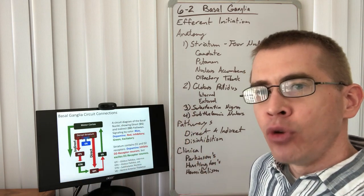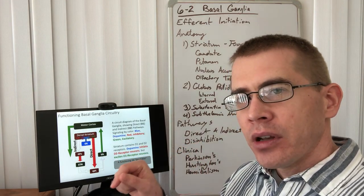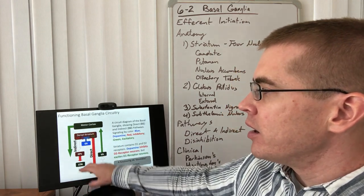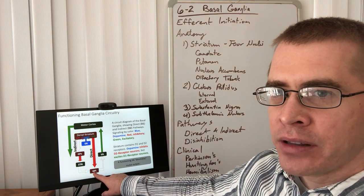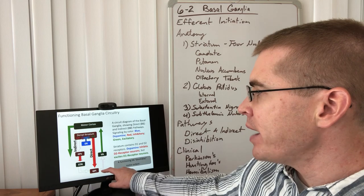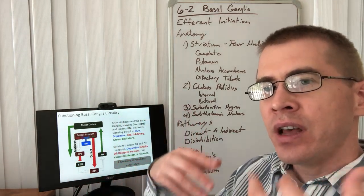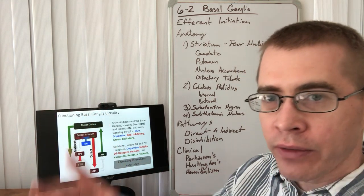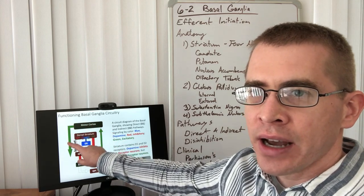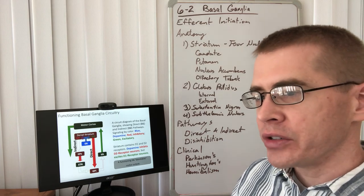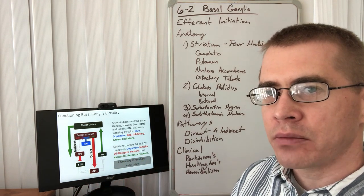With the substantia nigra releasing dopamine into the putamen, that causes inhibition of the indirect pathway and excitation of the direct pathway. The direct pathway inhibits the GPi, which disinhibits the VA of the thalamus. The VA is constitutively active and tells the motor cortex to release motor output. The motor cortex sends upper motor neuron projections down the spinal cord through the corticospinal tract to a lower motor neuron, causing motor output to occur. This is a functioning substantia nigra with a disinhibited motor output — normally motor output is inhibited, but here it has been disinhibited.